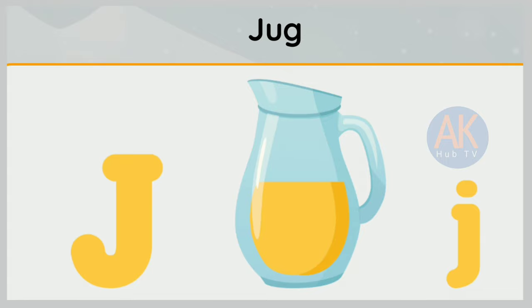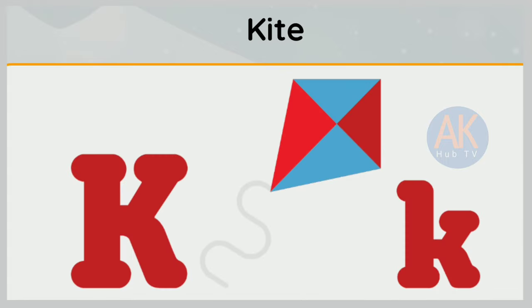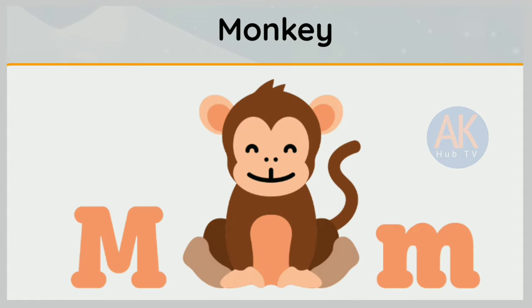J is for jag. J, j, jag. K is for kite. K, k, kite. L is for lion. L, l, lion.